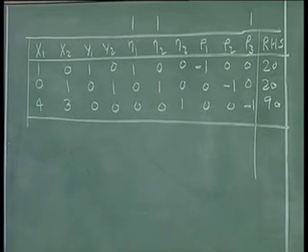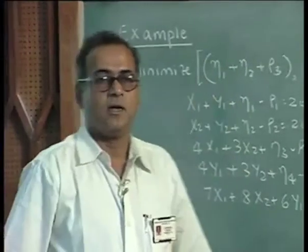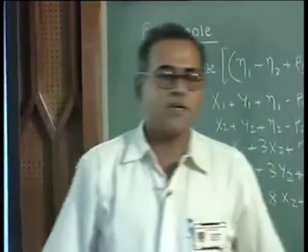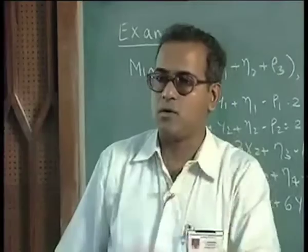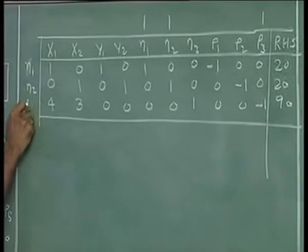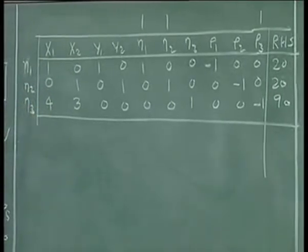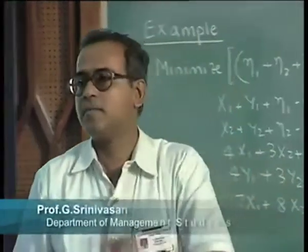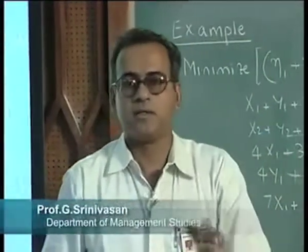This is how your first simplex table will look like. Because every constraint is an equation and every constraint has an eta or a rho, simply starting with eta1, eta2, eta3, the etas will always qualify to be initial basic variables and etas will have an identity matrix associated among themselves.